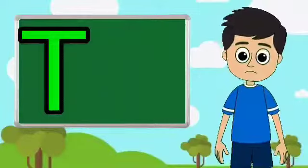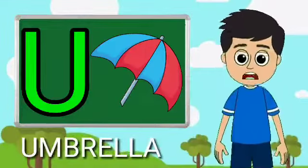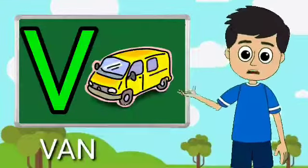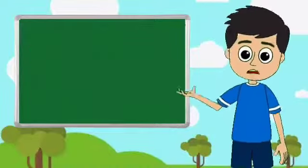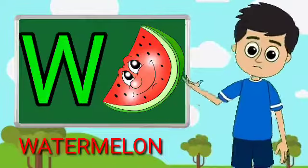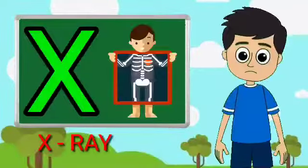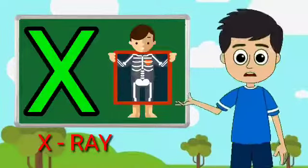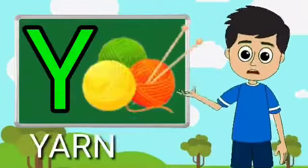U for umbrella, E for band, W for watermelon, X for extra, Y for yarn.